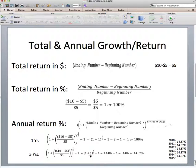So 1 plus 1 is 2 to the 1 fifth is 1.1487 minus 1 or 0.1487 or 14.87%. So 5 years of growth.